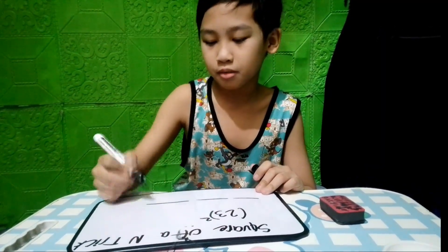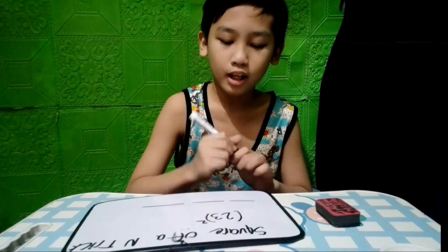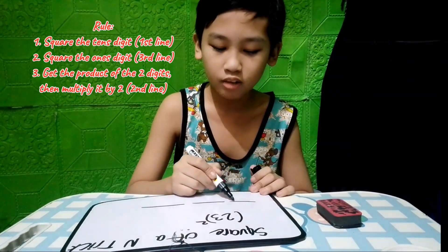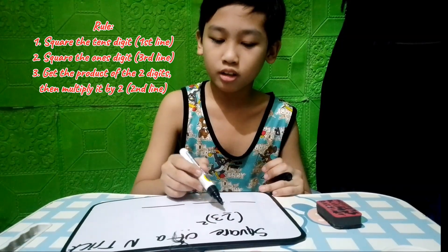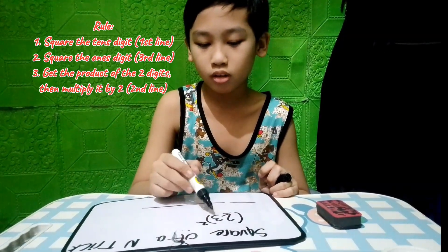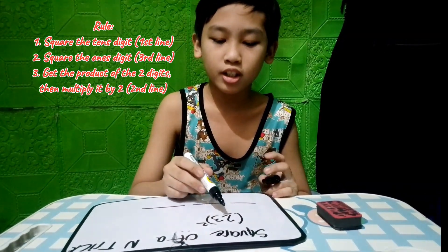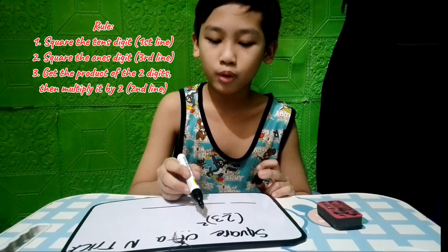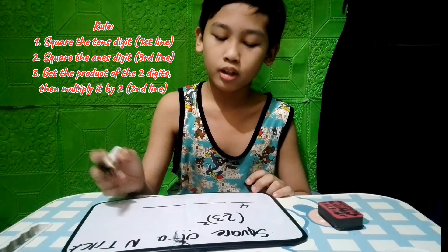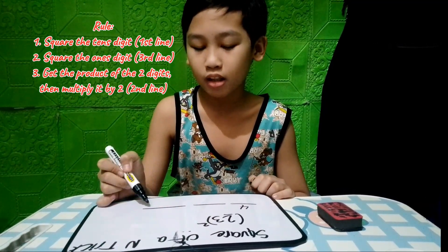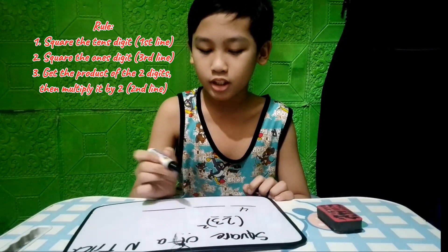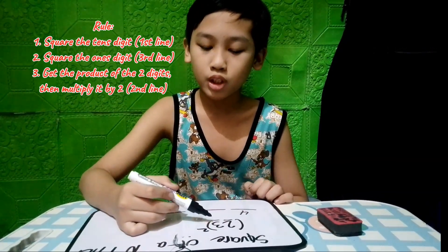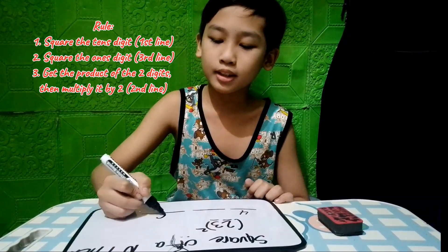First, make three separate lines. The first line will be represented as the tens digit squared, which is 2. 2 squared is 4. And then the last line will be represented as the square of the ones digit, which is 3. 3 squared is 9.